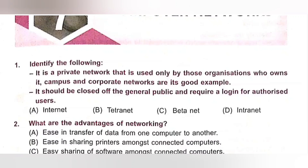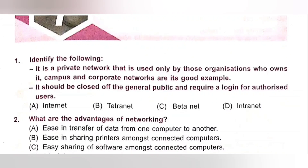Options: A. Internet, B. Tetranet, C. Betanet, D. Intranet. The answer is option D. Intranet is a private network that is used only by those organizations who own it. Campus and corporate network are its good examples. Option D, Intranet.